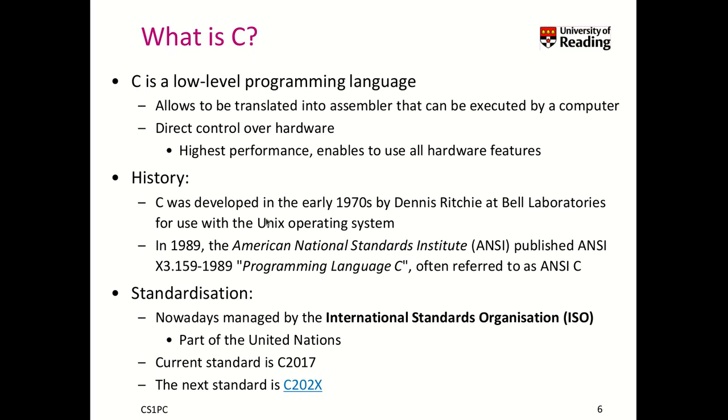So in terms of history, C was developed in the early 1970s by Dennis Ritchie at Bell Laboratories, initially for the UNIX operating system. And in 1989, the first standard has been created by the American National Standards Institute, ANSI in short, which was the programming language C that is often referred to as ANSI C.